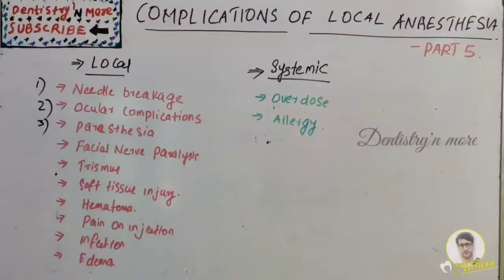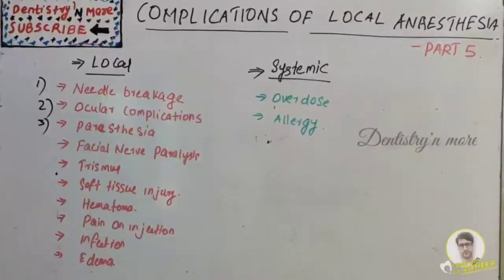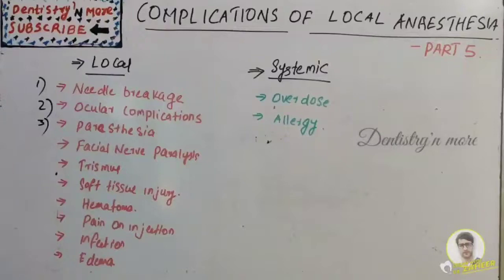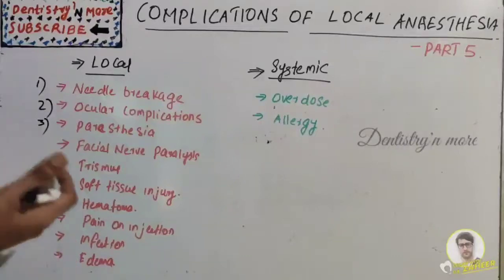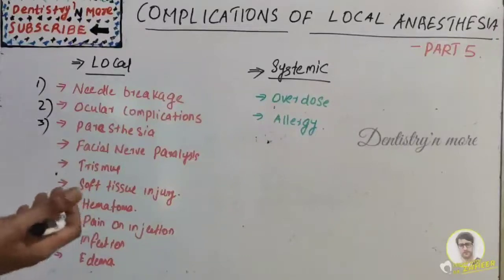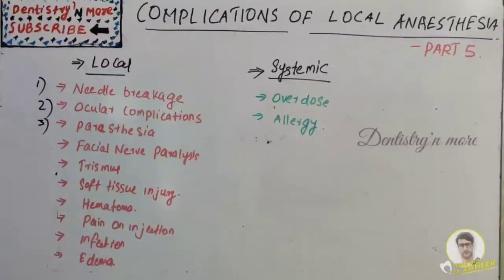Most paresthesia will resolve within eight weeks without any treatment. Management involves reassuring the patient that it is a transient problem, following up every two months, and if the sensory deficit persists for more than one year, consulting with a neurologist or oral surgeon.